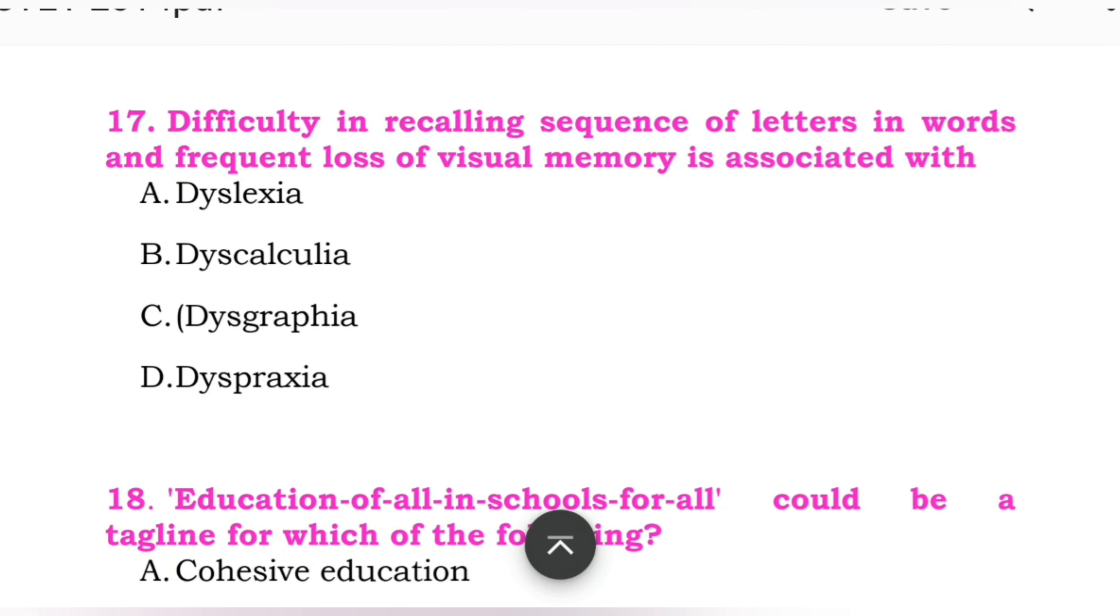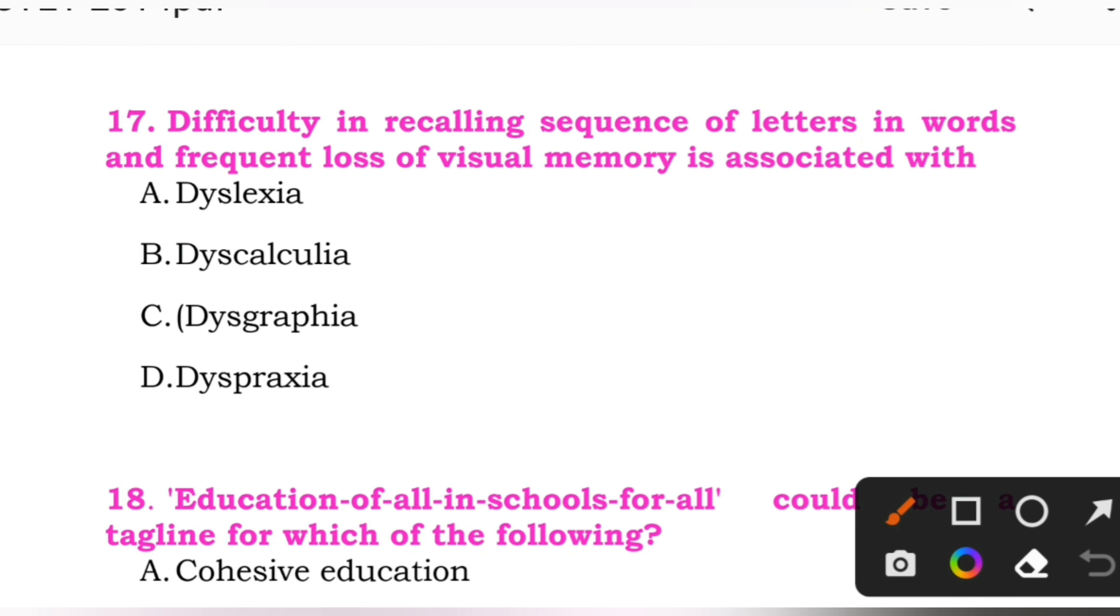Question number 17: Difficulty in recalling sequence of letters in words and frequent loss of visual memory is associated with. Options: A: dyslexia. B: dyscalculia. C: dysgraphia. D: dyspraxia. Here the right answer is A, dyslexia.